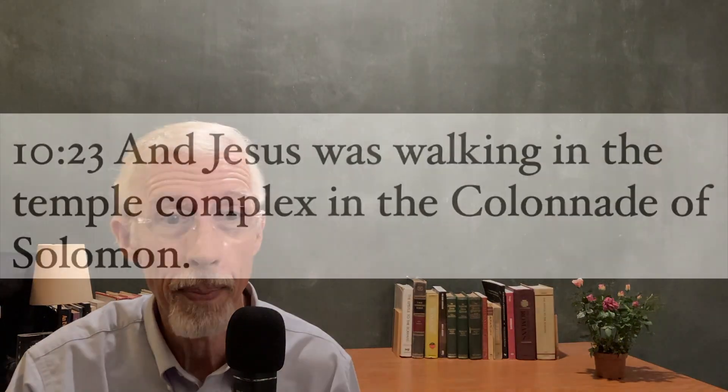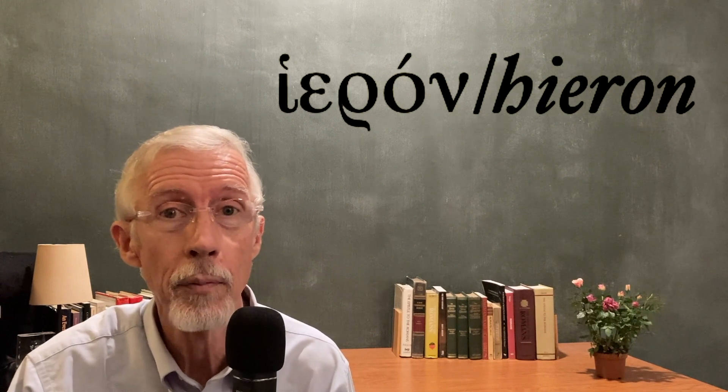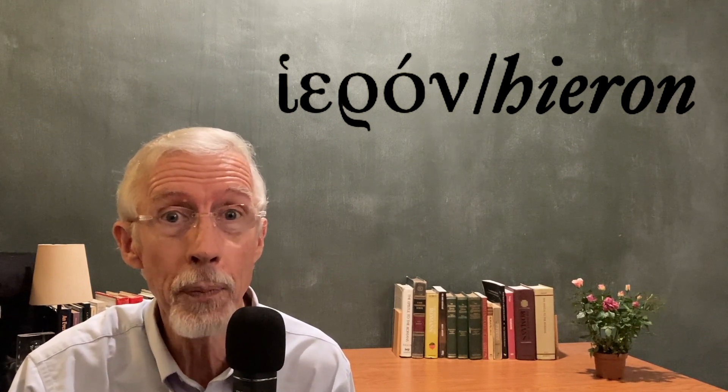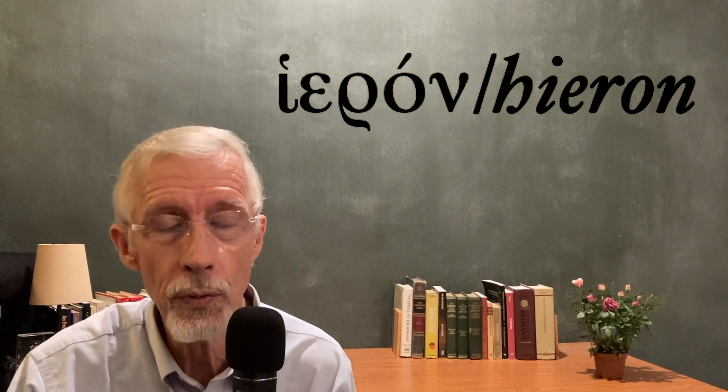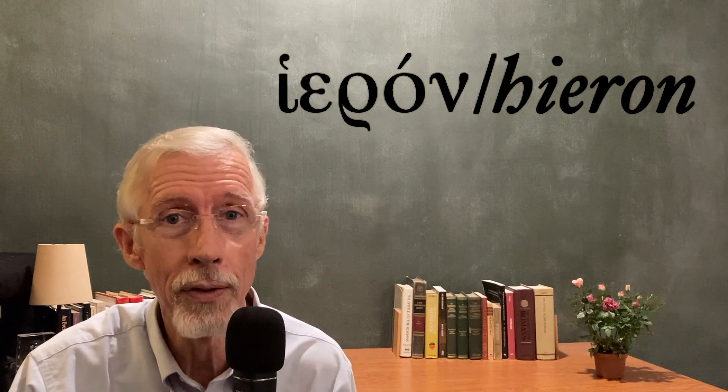Well, every Jew knows that the Feast of Dedication takes place in winter. But this is another example of John's helpful explanation for non-Jewish readers. Chapter 10, verse 23: And Jesus was walking in the temple complex in the colonnade of Solomon. Our translation here, the temple complex, reflects the word hi'eran. This is the building, the temple building and the surrounding courtyards. This is the word hi'eran, frequent in the Gospel of John.